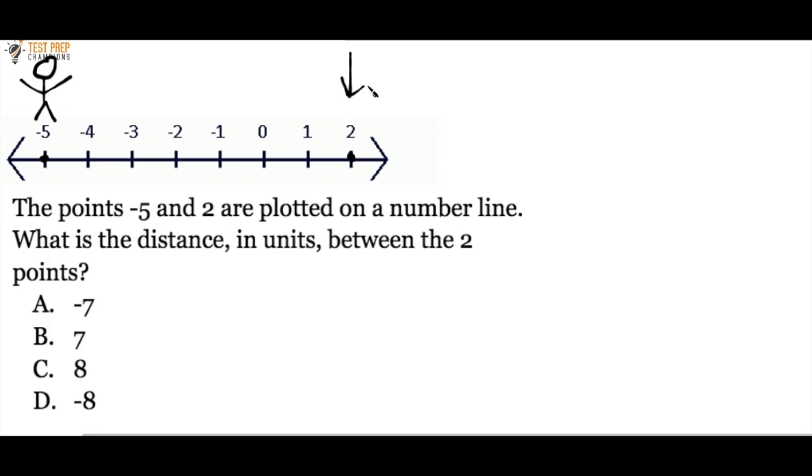So we have a stick figure person. The stick figure person is going to start at negative 5, and the person is going to go for a walk until they get to 2. And if we just count the number of steps along the way, that's going to give us the right answer. So let me show you.